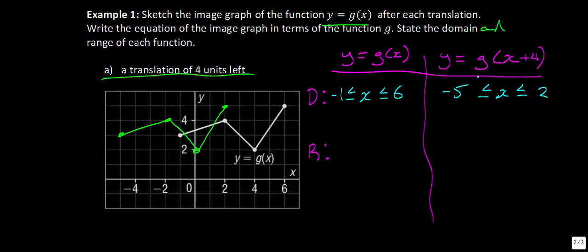Now the range. Has the range changed? The original function has y values from a high of 5 and a low of 2. Because we were simply moving the graph to the left, the range has not changed — it remains the same.